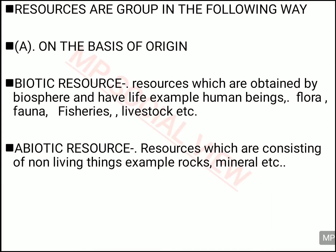You can classify resources on four bases. The first basis is origin — from where the resource is coming. When you divide resources on the basis of origin, they are of two types: biotic and abiotic. Biotic resources are those which have life, like flora, fauna, fishery, and livestock. Abiotic resources are those which do not have life, for example, rocks and minerals.